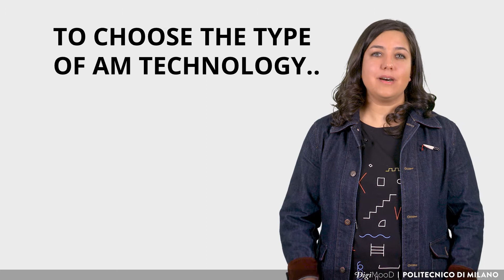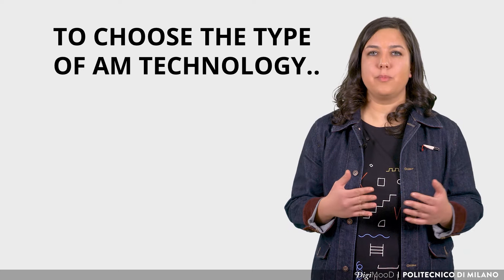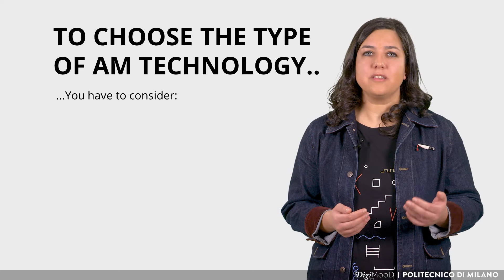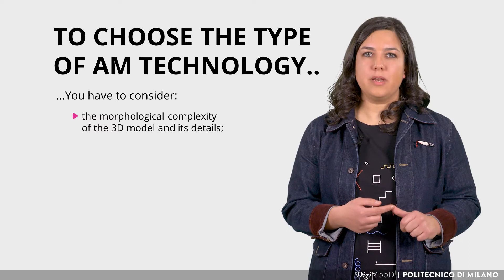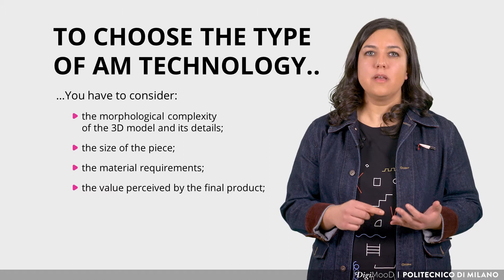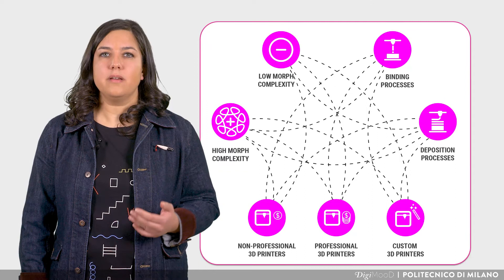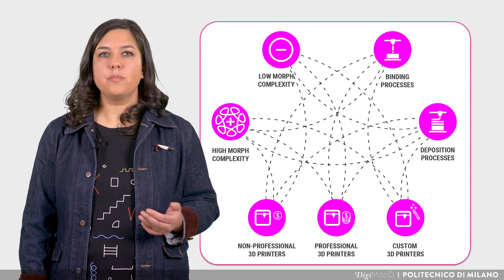If there are many types of 3D printers, how do you choose which type of technology should be used? This question does not have a universally viable answer. It is necessary to understand each time the various factors involved, which depend on the morphological complexity of the 3D model and its details, the size of the piece, the material requirements, the perceived value of the final product, and the need to integrate other materials at the production stage. For example, if you need to print a very detailed part, it will typically be advisable to choose SLA or SLS printers, which typically have more accurate tolerances.